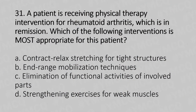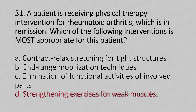A patient is receiving physical therapy intervention for rheumatoid arthritis, which is in remission. Which of the following interventions is most appropriate for this patient? Option A: Contract-relaxed stretching for tight muscles. Option B: End-range mobilization techniques. Option C: Elimination of the functional activities of involved parts. Option D: Strengthening exercise for weak muscles. The answer is Option D, strengthening exercise for weak muscles.